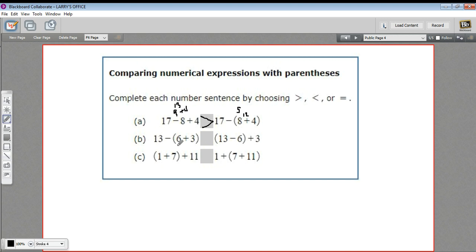All right, let's try the next one. We have 13 minus parentheses 6 plus 3. So I do what's in the parentheses first. 6 plus 3 is 9. So I have 13 minus 9. That gives me 4 over here.